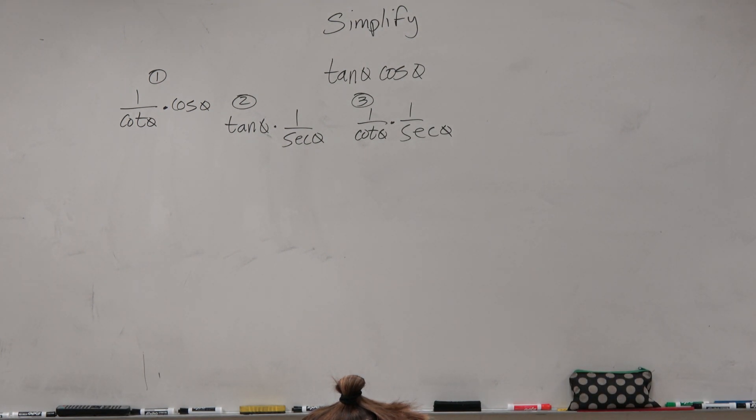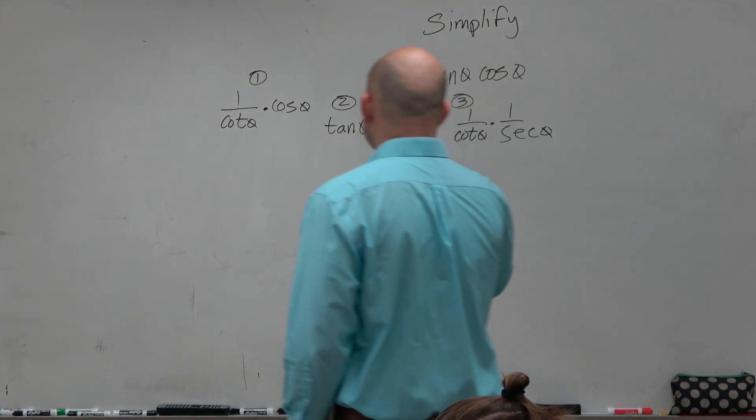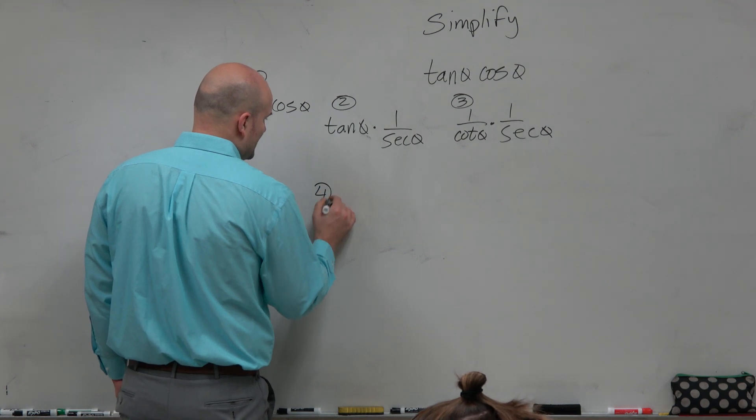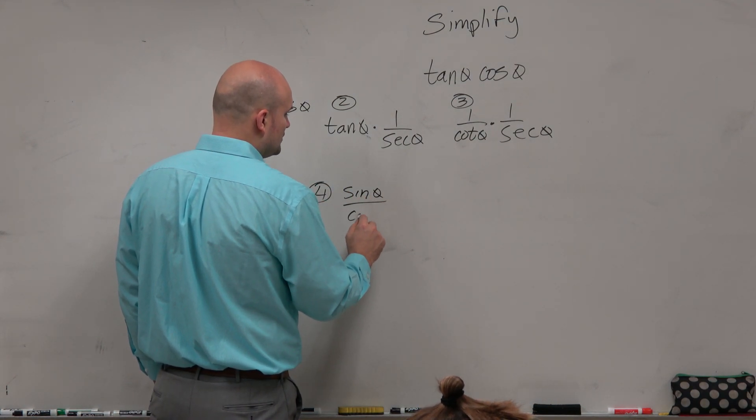Maybe we should look at the quotient identities, or at least for tangent. So I go over to tangent and I say, well, well, what if I did sine of theta over cosine of theta?